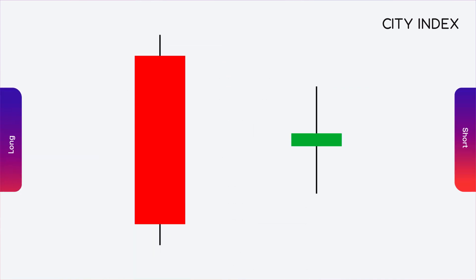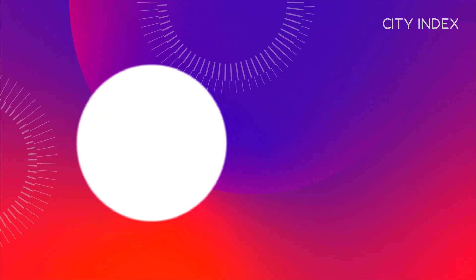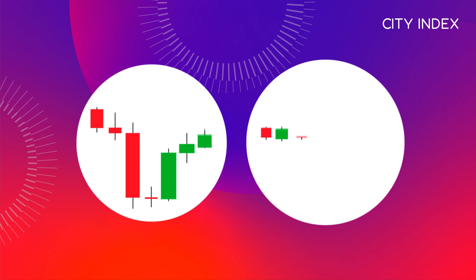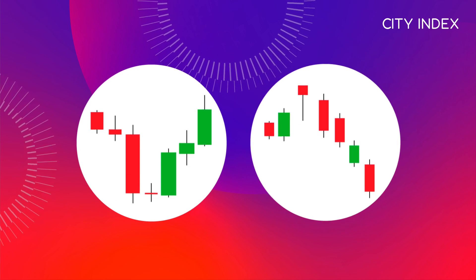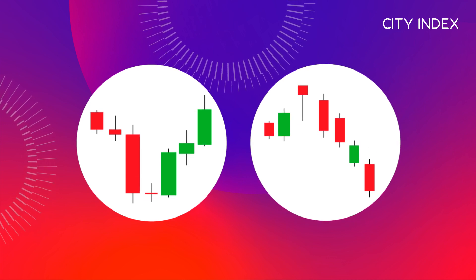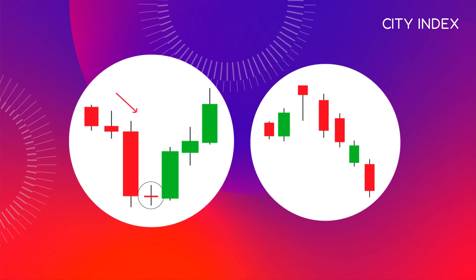A long body indicates that there has been strong buying or selling pressure, with a smaller body more indicative of a period of consolidation. The wick or shadow of a candle shows the highest and lowest price levels reached over the life of that candle.